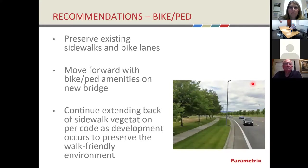Lastly, recommendations for the bicycle and pedestrian experience: there are already great facilities — sidewalks and bike lanes along the entirety of the corridor. Let's keep those and move forward with the bike and pedestrian amenities planned for the Kramer Bridge, providing a link across I-90. We also recommend continuing the back-of-sidewalk vegetation per city code, to preserve the walk-friendly environment on the corridor. This will help achieve the goals established in zoning and the comprehensive plan.